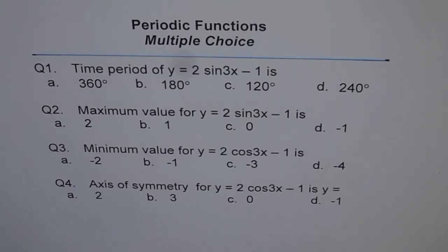Here is question number one. Time period of y = 2 sin 3x − 1 is: a) 360°, b) 180°, c) 120°, or d) 240°. Make a selection and then move on to the next question.